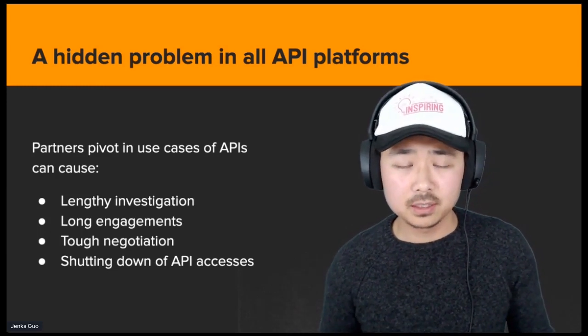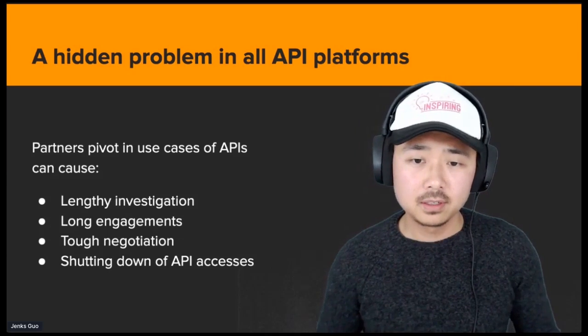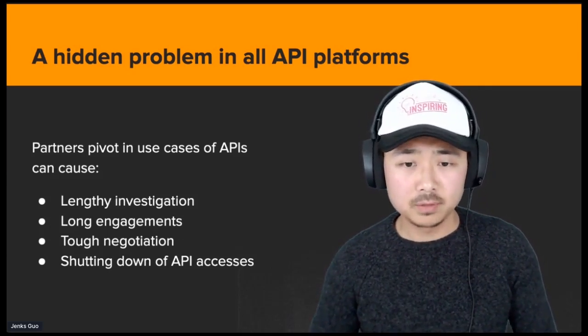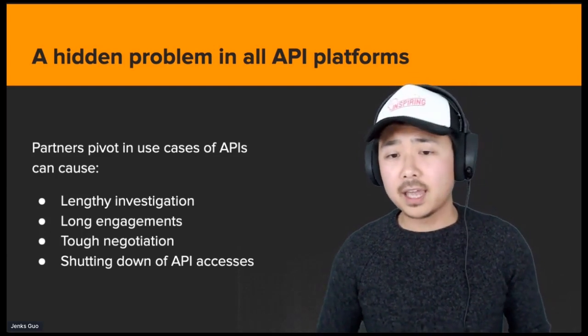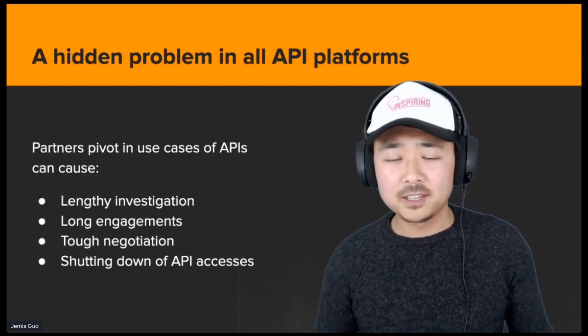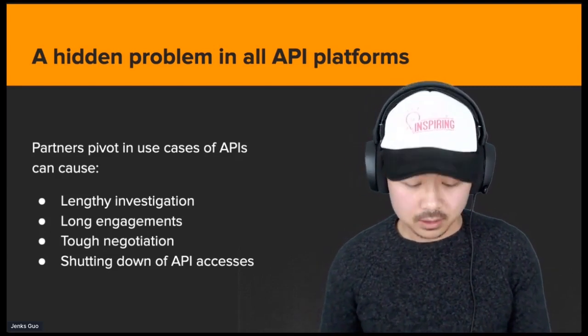There could be other use cases that your partners might be breaching and might be a good way to introduce formalized commercial partnership. For example, if they're starting to provide lending services or financial services with your data, you might be eligible for some revenue sharing. These are all possible scenarios that can be done by an API partner who is an API user. But if they're being quiet about it, they usually get away from it.